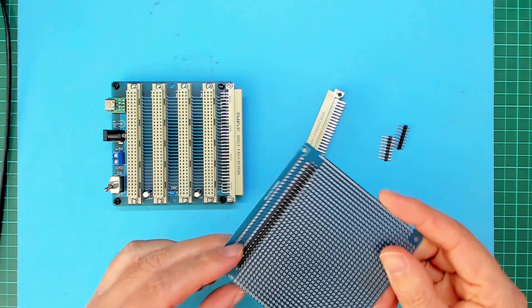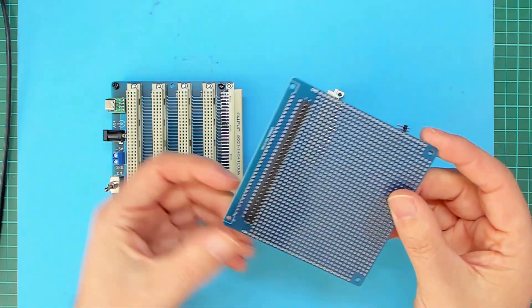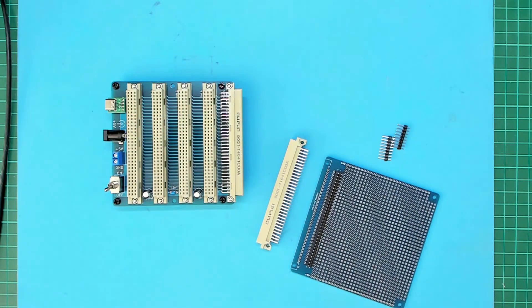OK, with the pin headers fitted, it just leaves the right angle DIN connector. Now there's a couple more items I'll need to attach the DIN connector. I need two M 2.5 nuts